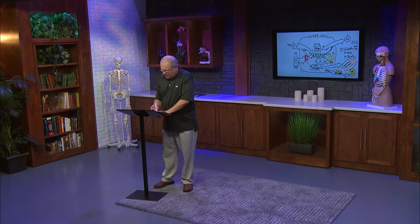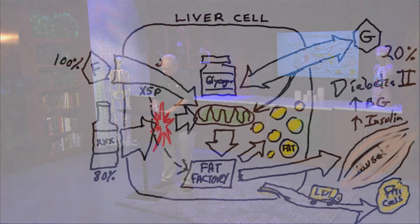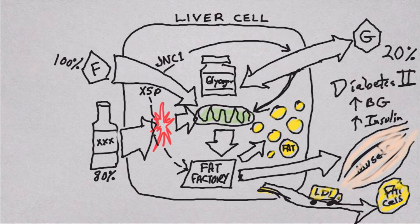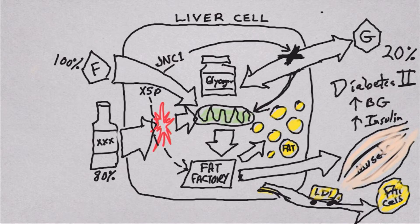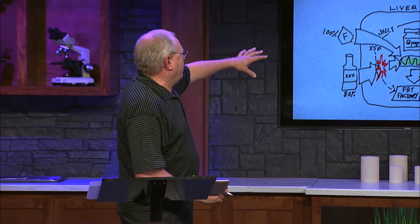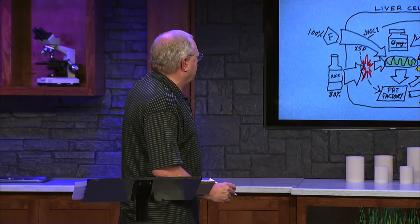There's another substance, an enzyme called JNC1, that also gets turned on. This substance goes to the insulin receptor — the little sugar door — and actually starts shutting it down so it doesn't work. It's as if the liver is saying, 'I've got all this fructose to deal with, please don't send any more glucose in here.' So we actually block the normal good functioning of glucose with all this extra overload of fructose.